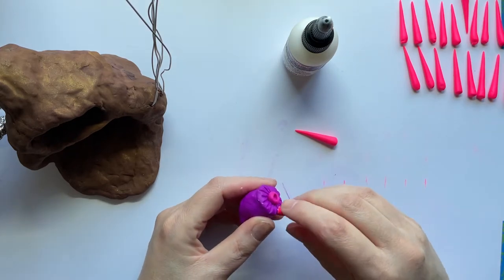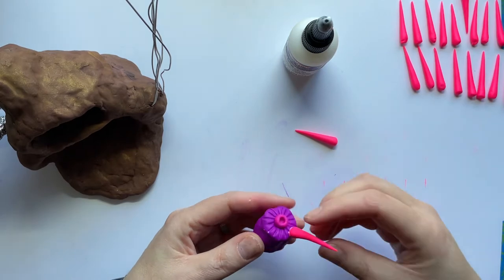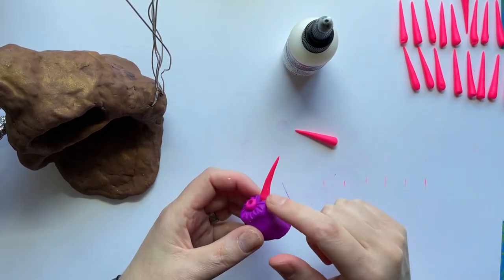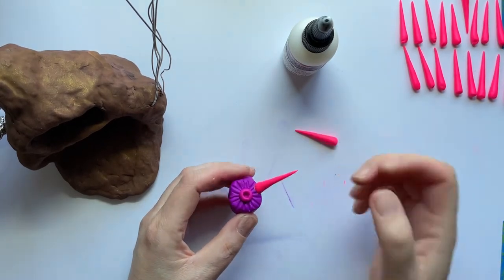Now the glue is gonna end up being clear in the end, so if you get a little blob that's okay. If you get a giant blob, wipe it off. Use a little paper towel or something and get it.